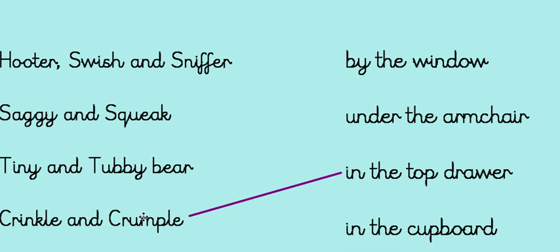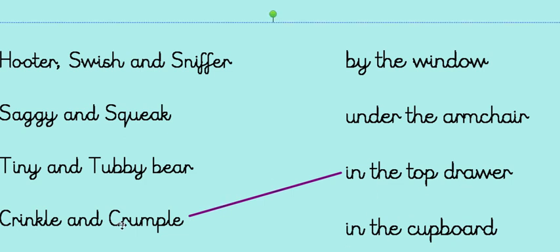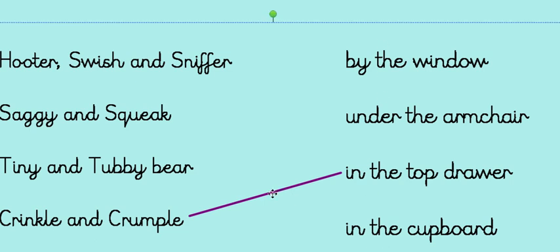So here we've got some different monsters, and here we've got some different places. Shall we read them together? Hooter, Swish and Sniffer, Saggy and Squeak, Tiny and Tubby Bear, and Crinkle and Crumple. And we've got some different places around the room: by the window, under the armchair, in the top drawer, or in the cupboard. And if I remember rightly, Crinkle and Crumple were found in the top drawer — they were top drawer twins, weren't they? I'd like you to pause the video here. Write down the monsters on one side of your page, like I have, and the places on the other. And then I'd like you to see if you can draw some lines to match the monsters to the places they were hiding. Have a go.